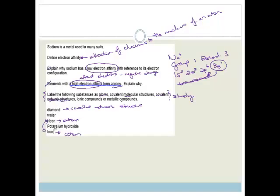Your water is a covalent molecular structure because it's made up of molecules of water. And potassium hydroxide is basically your ionic compound. But that, guys, is basically learning, so you need to go through that and make sure you understand the differences between these different structures and what they are so that you can name them. Moving on.